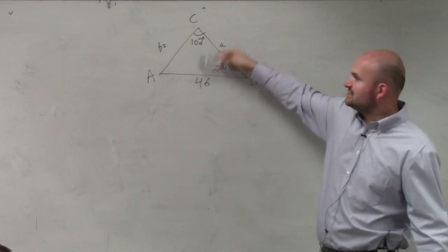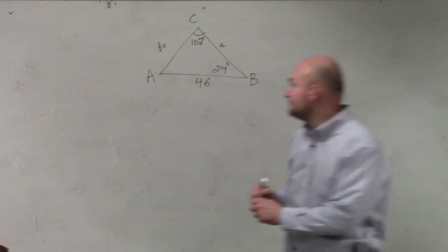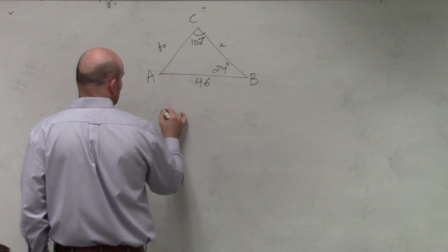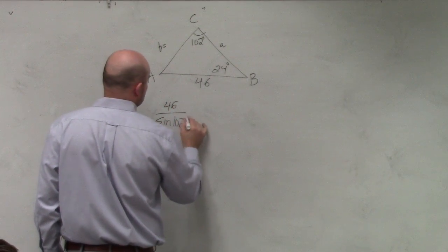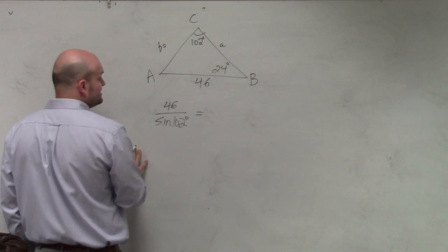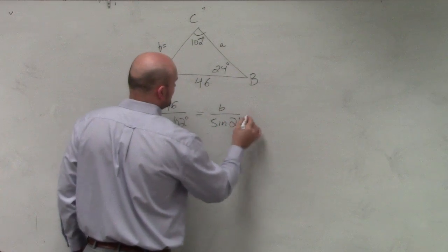Notice how the opposing side lengths are like the same variable, right? A across from A, B across from B, C across from C. So I can rewrite this as 46 over the sine of 102 degrees is equal to B over the sine of 24 degrees.